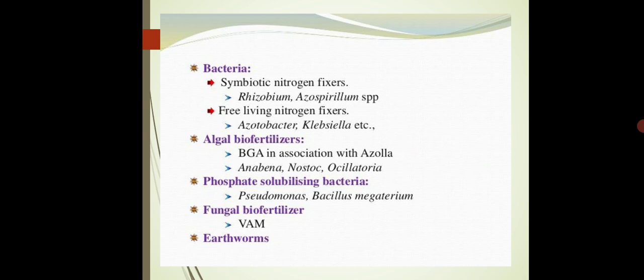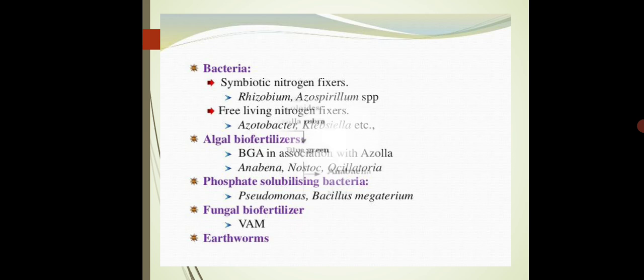Next are phosphate-solubilizing bacteria, which include Pseudomonas and Bacillus megaterium. The last group is fungal biofertilizers, which include VAM. These are the examples of biofertilizers. Last is earthworms, which are called the friend of the farmer — they enhance soil fertility, help maintain the texture of soil, and ultimately increase the yield of crops.